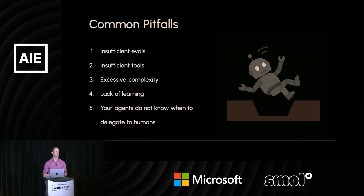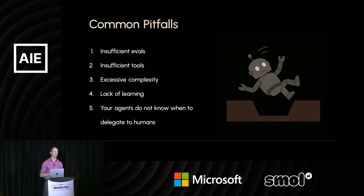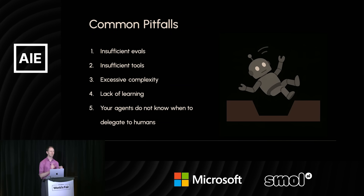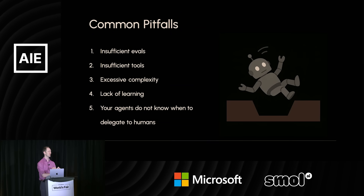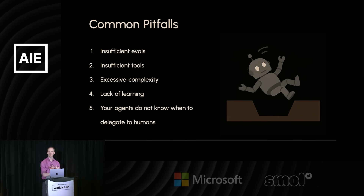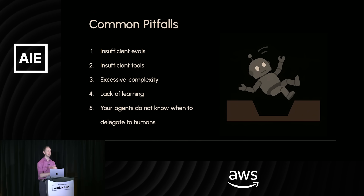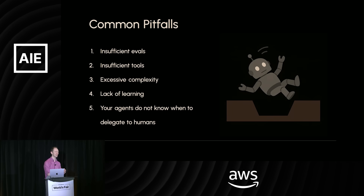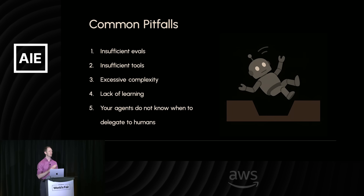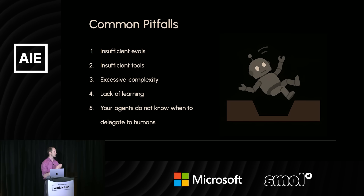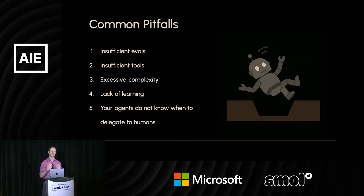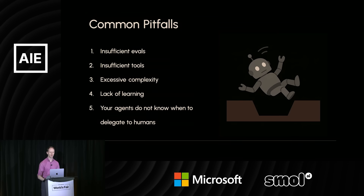Now to some of the common pitfalls we've seen both internally and speaking with folks outside of Microsoft. Far and away the biggest limitation is insufficient evals. On the tool side, maybe you haven't built enough tools, descriptions are not sufficiently accurate or clear, or there's too high a degree of semantic overlap between your tools — causing individual completion calls to get confused between tools and leading to worse outcomes.